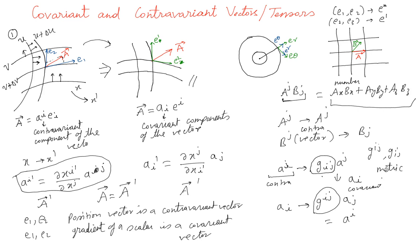We'll talk about the metric in more detail in the next lesson to clarify how indices are placed and the whole process of going between contravariant and covariant. I just wanted to introduce how the inner product extends to cases when axes are not orthogonal. For a Cartesian system, g_ij equals delta_ij, which gives the familiar inner product, but for curvilinear or curved coordinate systems g_ij is not delta_ij, and we'll discuss the general g_ij next time.